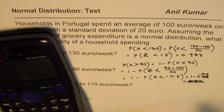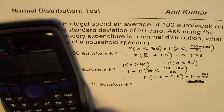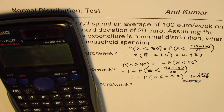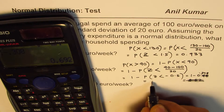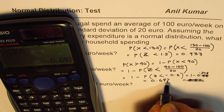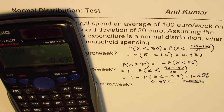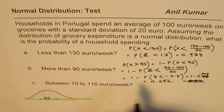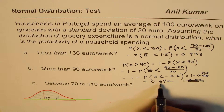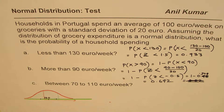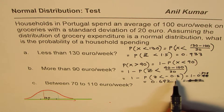So it is 1 minus 0.308, which gives us 0.692 in decimals. So the probability of spending more than 90 euro is 69.2%. That makes much more sense — it is on the right side of 90, which is close to the mean, so a large proportion is expected.